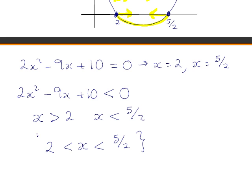5/2 is the same as 2 and a half. So in relation to the original question, the concentration of the drug in the body is greater than 3 milligrams per milliliter between 2 and 2.5 hours after the injection is given.